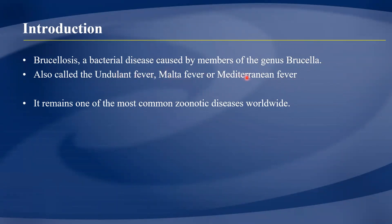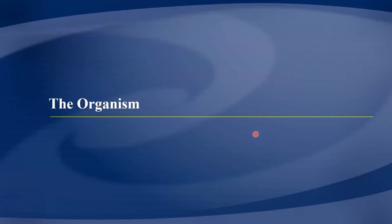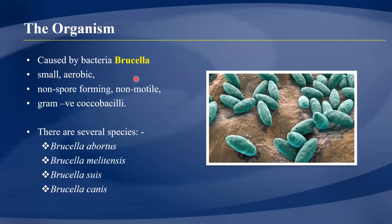Brucellosis is sometimes referred to as Malta fever, undulating fever, or Mediterranean fever, and it is one of the commonest zoonotic diseases worldwide. The organism itself — brucella — is a gram-negative coccobacillus, meaning it has a structure resembling both a coccus and a rod. It is gram-negative, non-motile, and non-spore-forming.